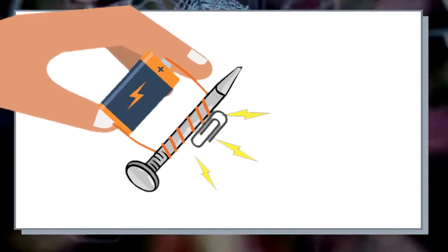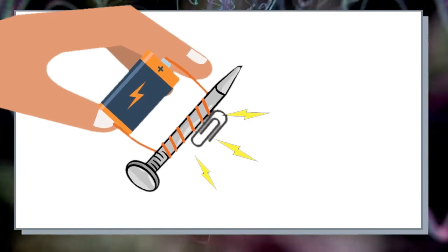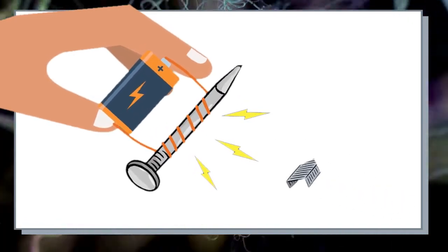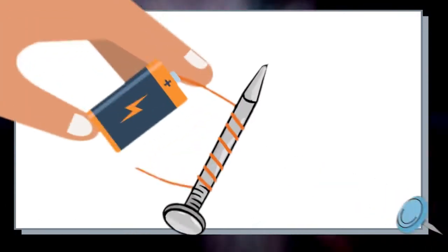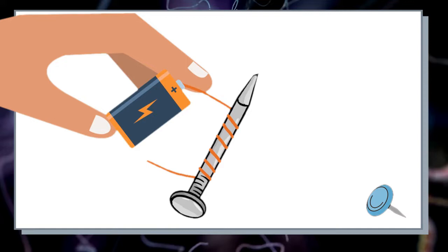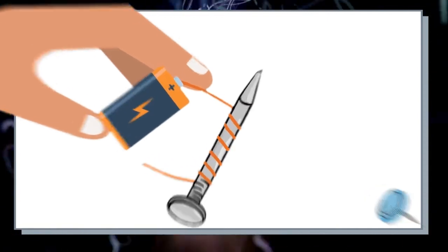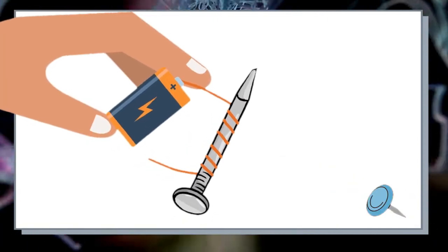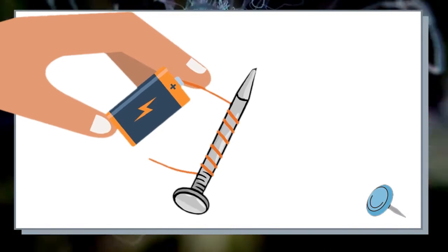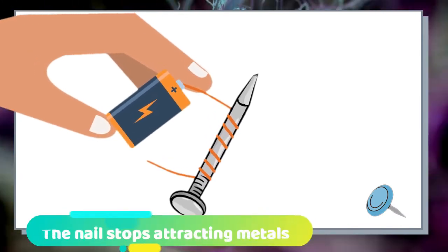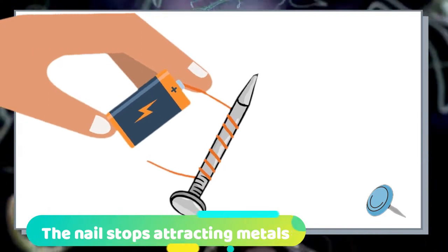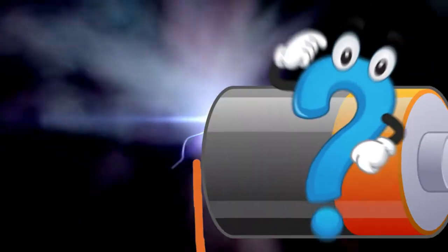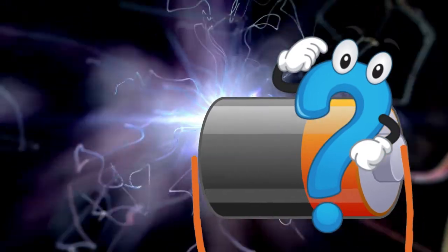The iron nail acts as a magnet while electricity is flowing through the coil of wire. When the circuit is broken or when the electricity stops flowing through the coil of wires, the nail stops attracting metals.